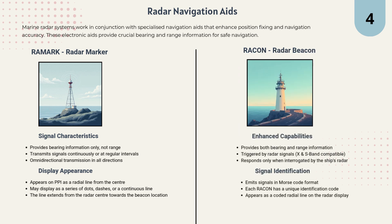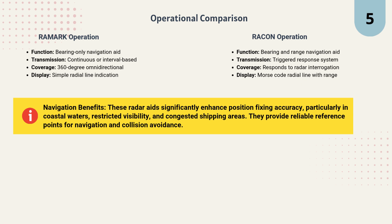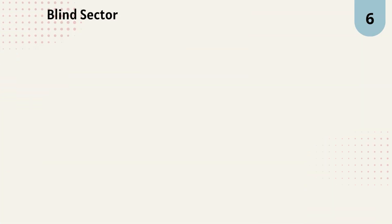Racon, or radar beacon, is more advanced. Unlike Ramark, Racon provides both bearing and range information. It only responds when interrogated by a ship's radar, and it works with both X and S-band. Each Racon emits a unique identification code in Morse, which shows up as a coded radial line on the radar display. To put it simply: Ramark is always transmitting — it's a bearing-only aid giving a basic radial line. Racon is triggered only when needed, providing both bearing and range with Morse code identification. These aids enhance position fixing accuracy, especially in coastal waters, during restricted visibility, and in congested shipping areas.